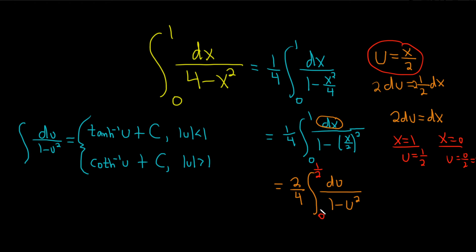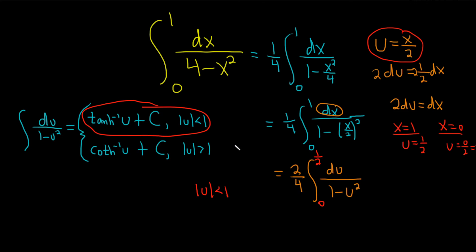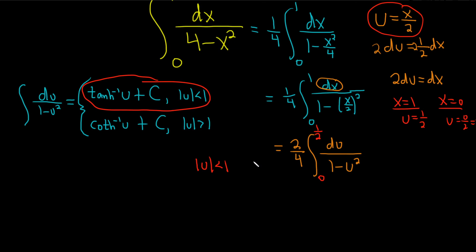You see, we're integrating between 0 and 1 half. So u is a number between 0 and 1 half. That means that the absolute value of u is less than 1. That means we're using this formula. Really nice way to do a problem, I think. It's a little bit different. It's good to think a little bit differently sometimes.